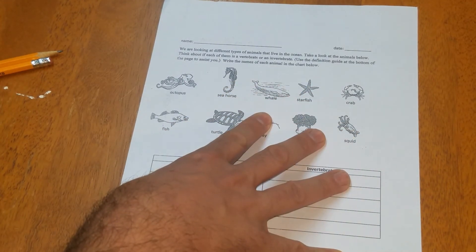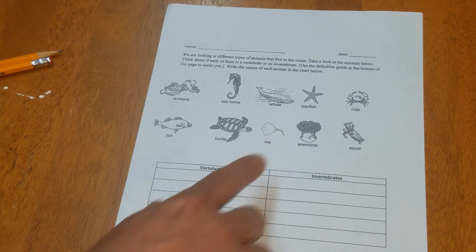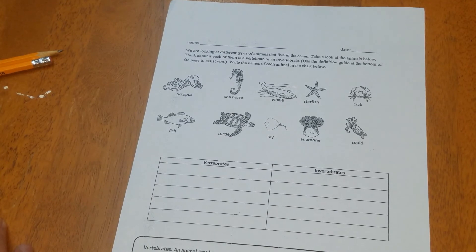Remember, if you don't feel like using this paper, you can just type in a doc a list of vertebrates and a list of invertebrates and just send that to me. You don't need to print and fill this paper out if you don't want to. All I really want to know is can you tell the difference between these kinds of animals?